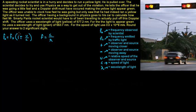Hi guys. Today we're talking about the Doppler Effect. In this problem, a speeding rocket scientist is in a hurry and decides to run a yellow light.